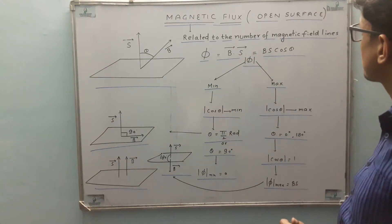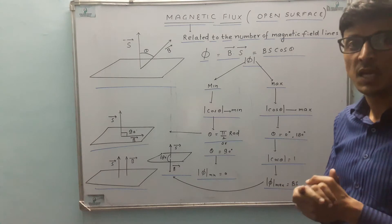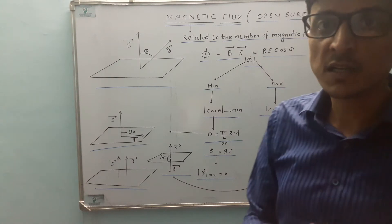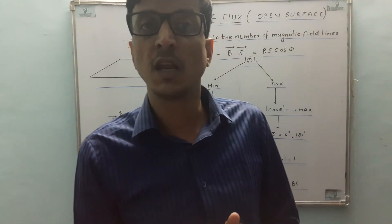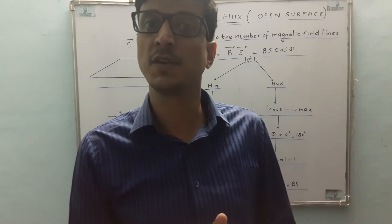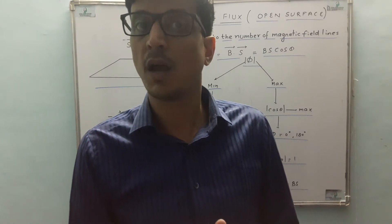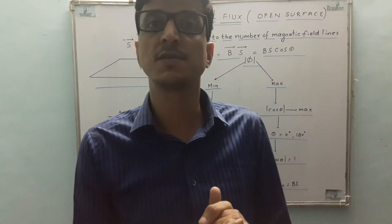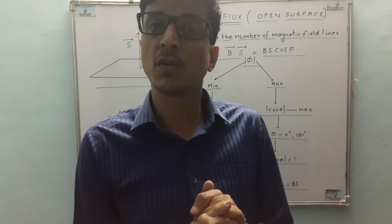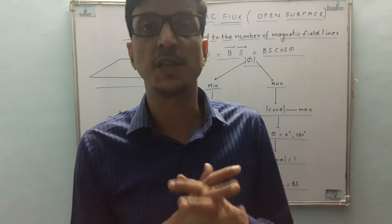It is Magnetic Flux for an open surface. The first thing is, Magnetic Flux is related to the number of magnetic field lines crossing a surface area. I will repeat this: Magnetic Flux is related to the number of magnetic field lines crossing an area.